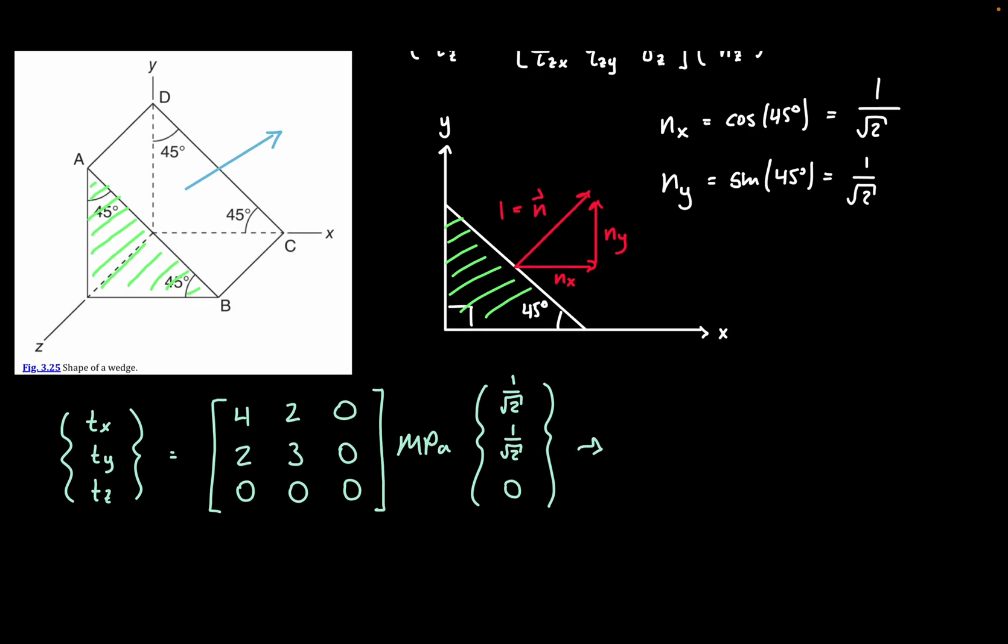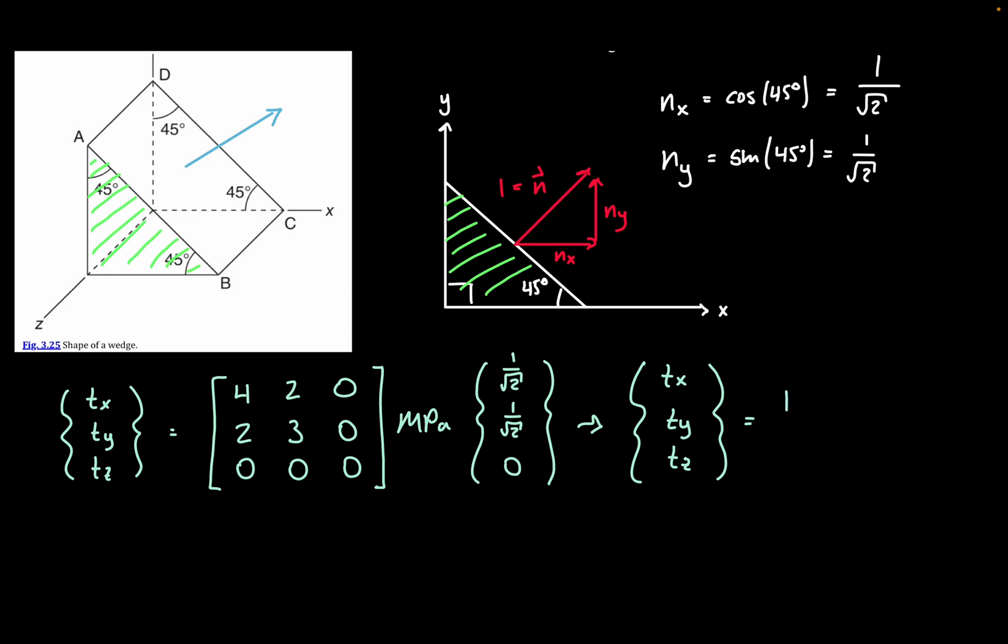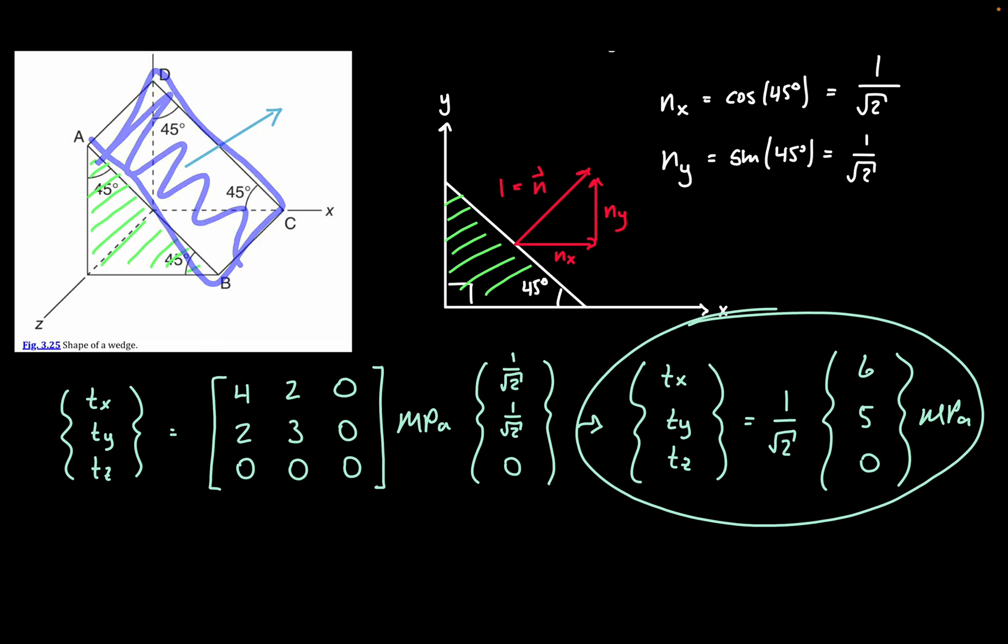So now what we can do is we can write out that our traction vector TX, TY, TZ is going to be equal to, so I'll pull the 1 over radical 2 out, and then we're essentially just doing matrix multiplication. So we'll have 6 for our first entry, essentially multiplying these two together, we'll have 0, and then same thing for the other rows, and then we'll get 5, and then we'll get 0, and then we also have units. So we can't forget those. So this is essentially our traction vector, or this is essentially the stress components experienced on this face ABCD.